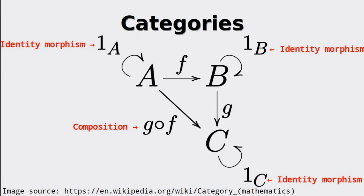First of all, we have identity morphisms, which are arrows that go from an object to itself. Then we also have a composition of arrows, going from A to Z in this case, because we could go from A to C via the arrows F and G, so their composition is also a viable option.